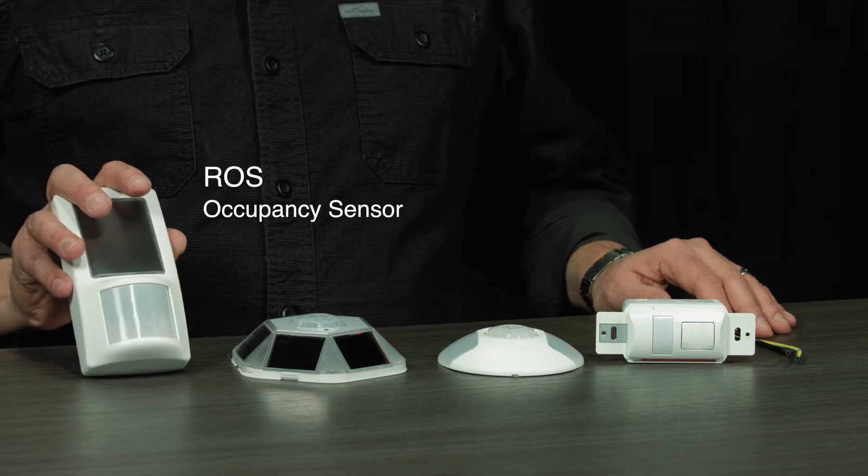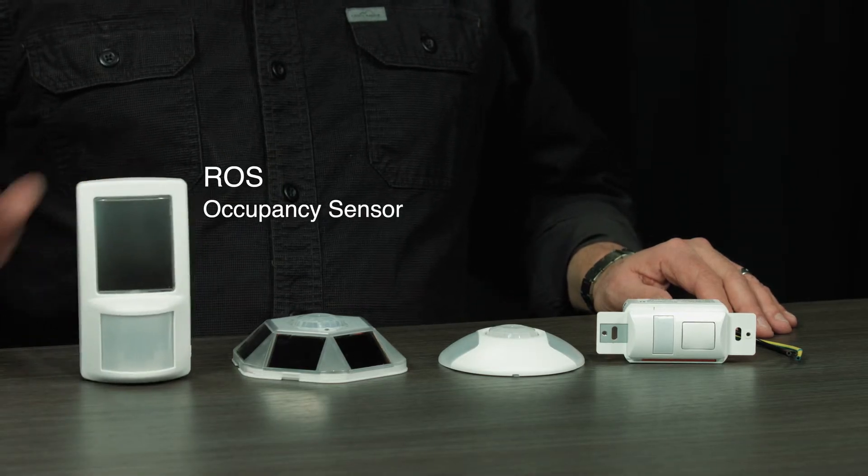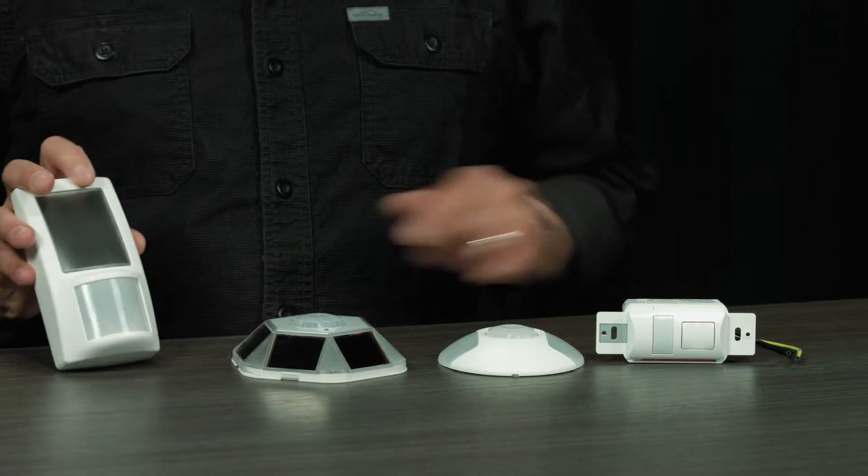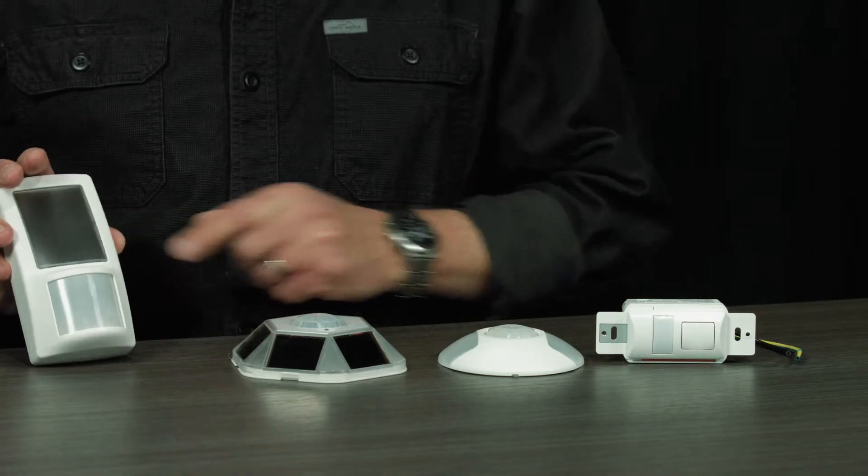This is the ROS sensor. It's a wall mount device suitable for hallway, corner, and wide-angle applications. You can see the large solar panel here. It's a solar powered device.